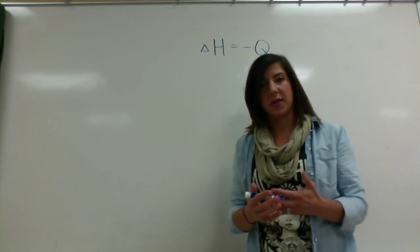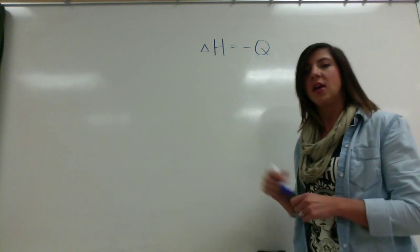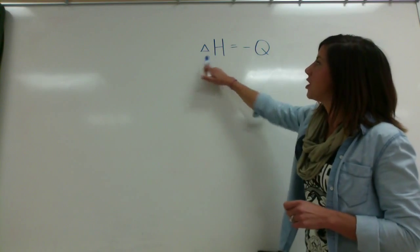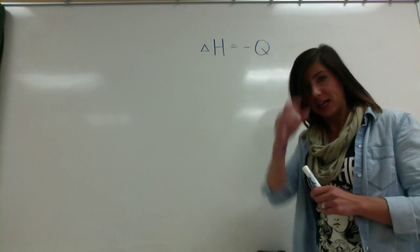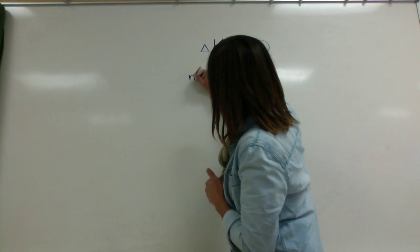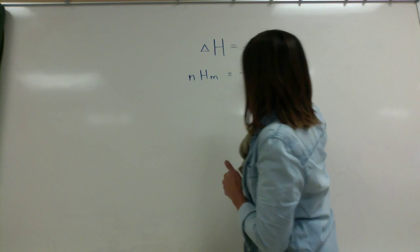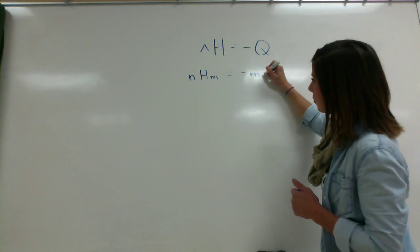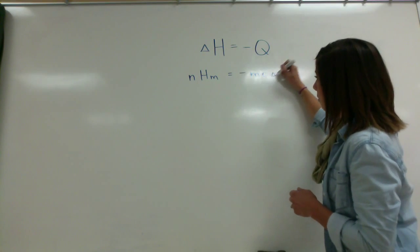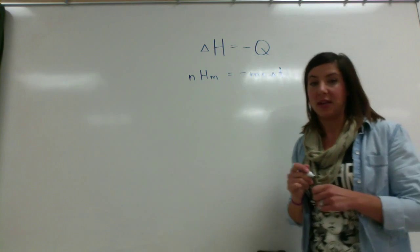In a calorimeter, the change in enthalpy of a reaction gives off a change in heat — a change in potential energy equaling a change in kinetic energy. The equation we use is NHm = -mCΔT, where N is the number of moles, Hm is the molar enthalpy, m is the mass of the solution, C is the heat capacity, and ΔT is the change in temperature.